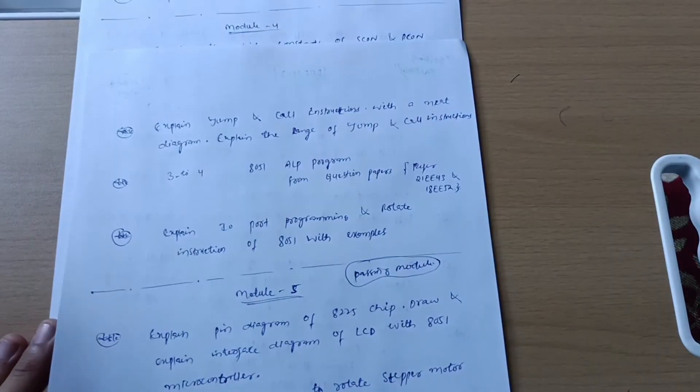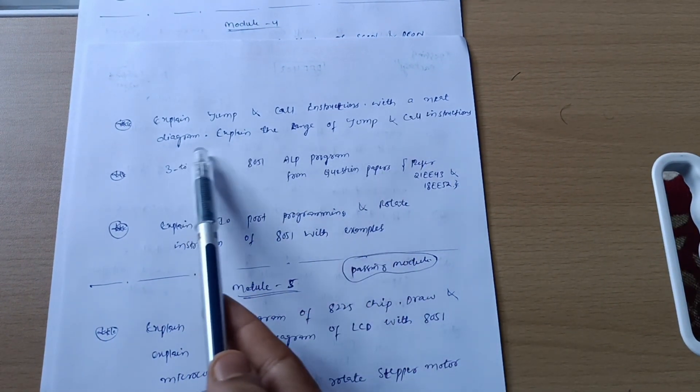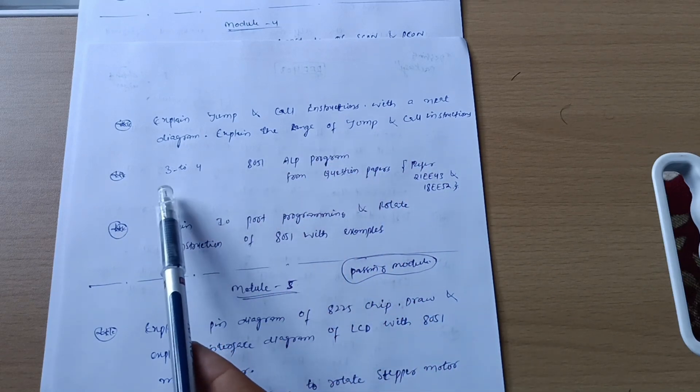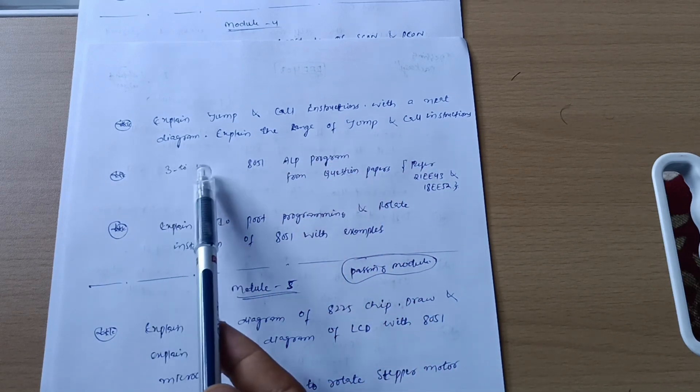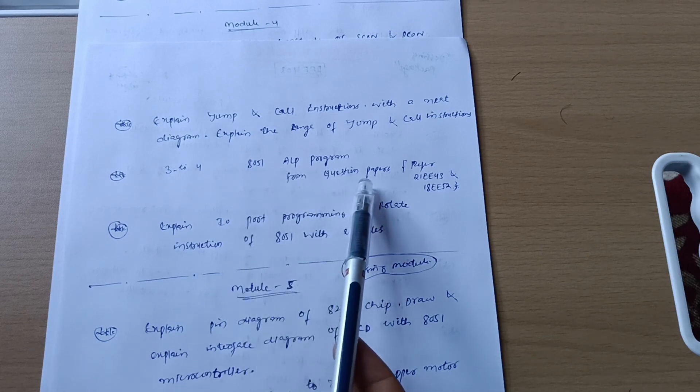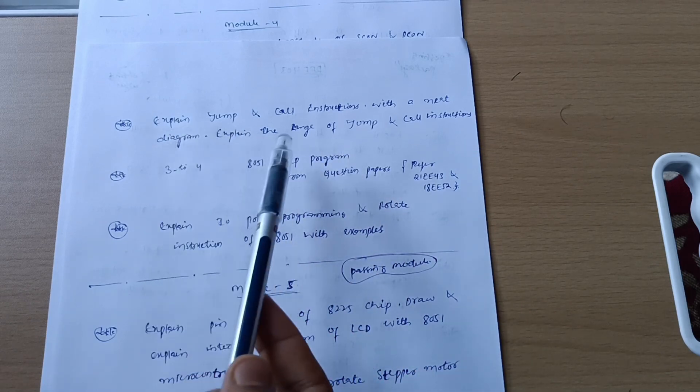Next is explain jump and call instructions with a neat diagram. Explain the range of jump and call instructions. You should go through three to four programs. For that you can refer the question paper 18E52 and 21EE43 and also model question paper, whichever is convenient for you people.